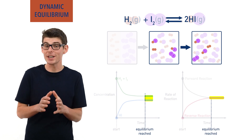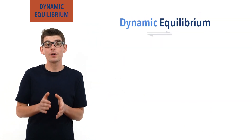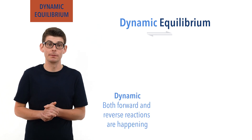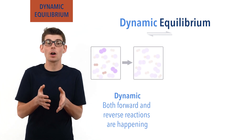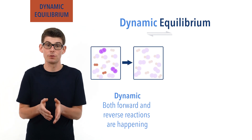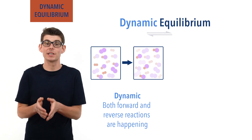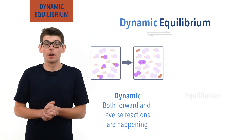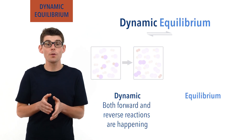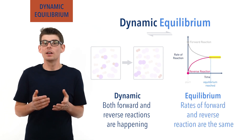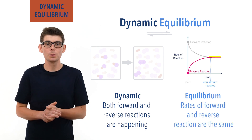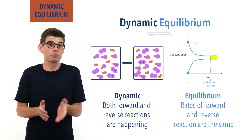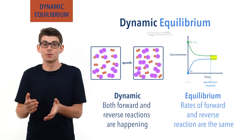The word 'dynamic' here is really important. The dynamic part refers to the fact that both the forward and reverse reactions are still happening. In our example, hydrogen and iodine are constantly colliding and forming hydrogen iodide, and hydrogen iodide is constantly reacting to form hydrogen and iodine. The equilibrium part refers to the fact that the rates of both reactions are the same and it looks like the system isn't changing at all. Concentrations of everything stay the same and all physical properties of the system, like colour, temperature and pressure, stay the same as a result.